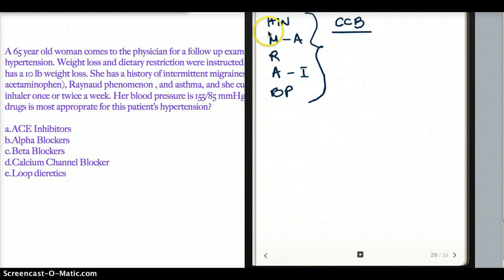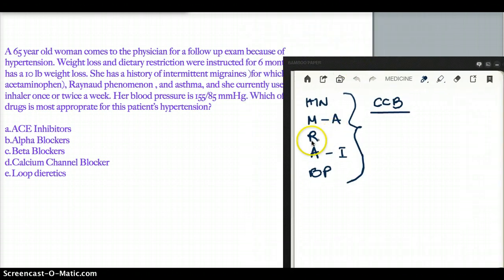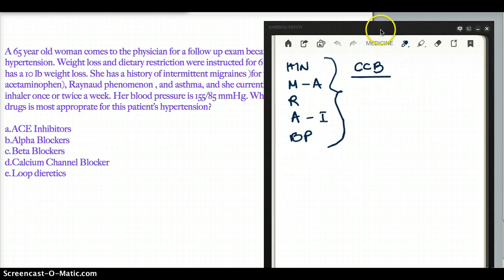Now, let's look at our patient. Patient has hypertension, migraine, Raynaud's phenomena, asthma, blood pressure. ACE inhibitor might not be the best choice. There might be a better drug that's out there.